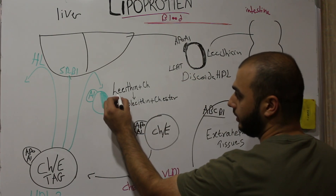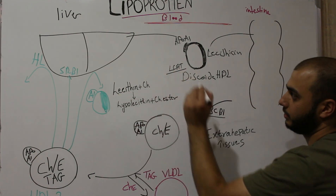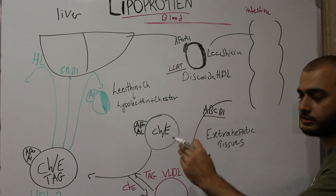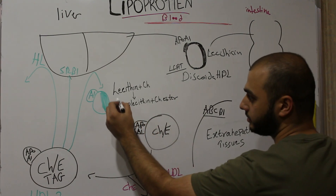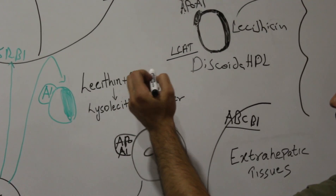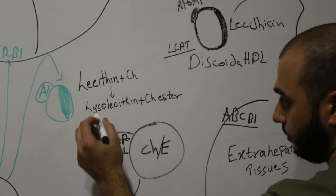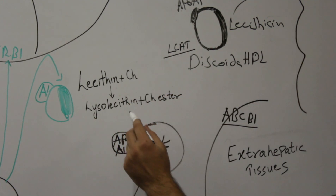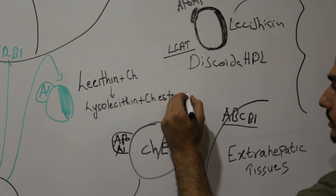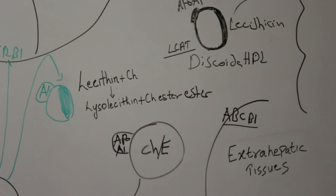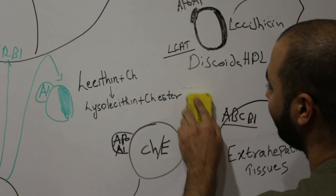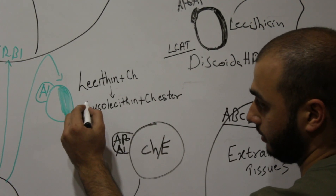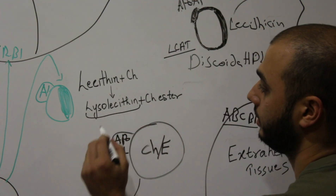LCAT stands for lecithin-cholesterol acyl transferase. It takes an acyl group from lecithin and associates it with a cholesterol molecule. The result of this reaction is lysolecithin and cholesterol ester.